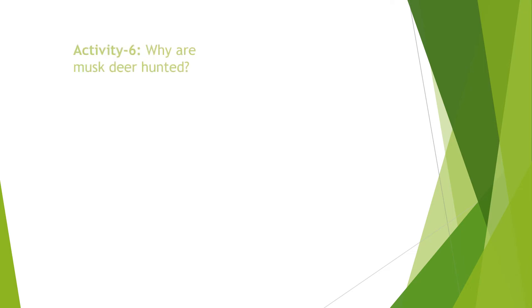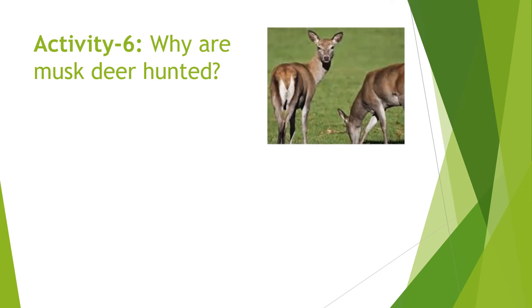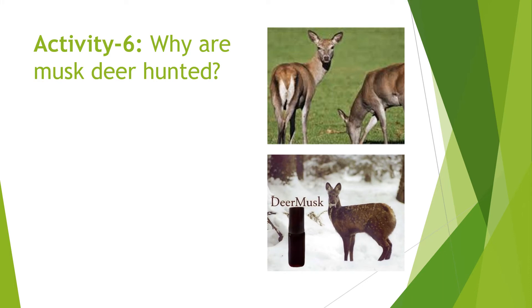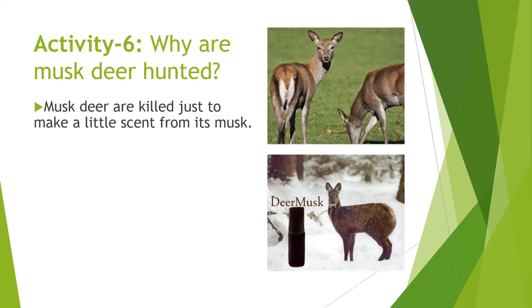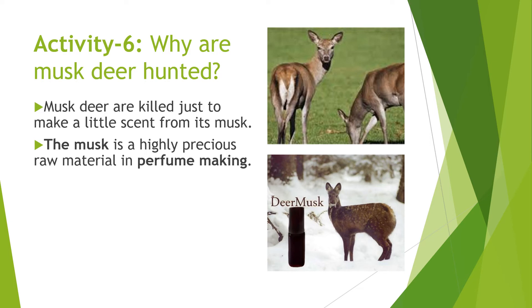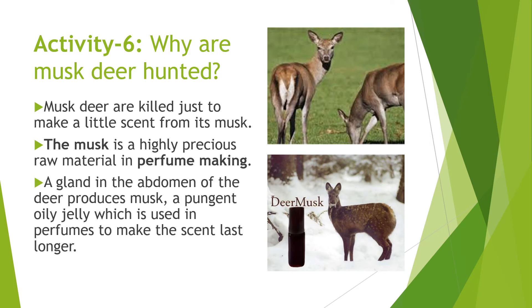Let us do activity number six. Here also we have to observe some pictures and answer the question: why are musk deer hunted? This is the picture of the musk deer, and a scent is being extracted from one of its parts. Musk deer are killed just to make a little scent from its musk. This musk is a highly precious raw material in perfume making. A gland in the abdomen of the deer produces musk — a pungent oily jelly which is used in perfumes to make the scent last longer.